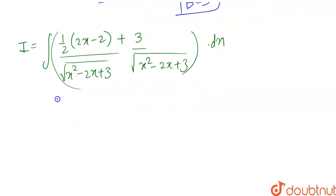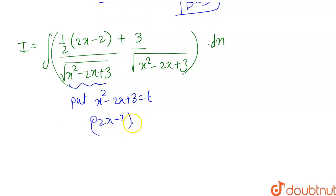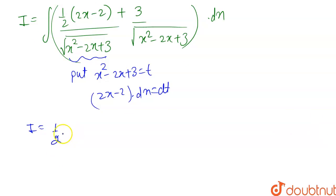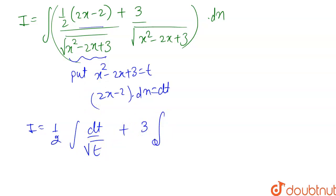So now let's integrate one by one. For the first part, let's put x squared minus 2x plus 3 equal to t, then (2x minus 2) dx equals dt. So i becomes 1/2 times the integral of dt over the square root of t, plus 3 times the integral of 1 over the square root of (x squared minus 2x plus 3).